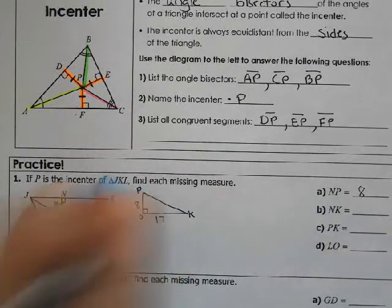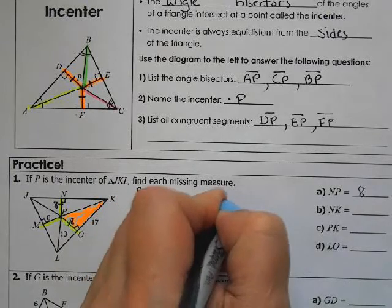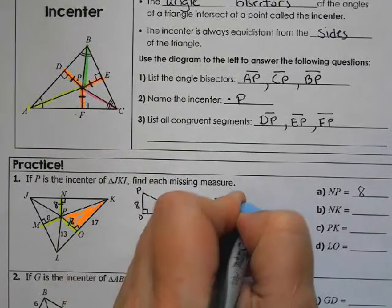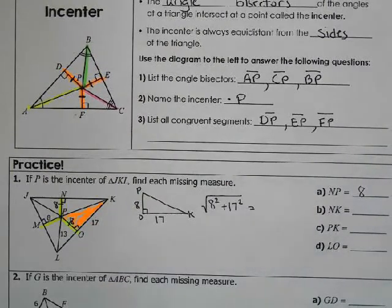So you want to do Pythagorean theorem. So 8 squared plus 17 squared. And again, to save time, we know we have to take the square root at the end. So let's just do that now. And that would give you PK.